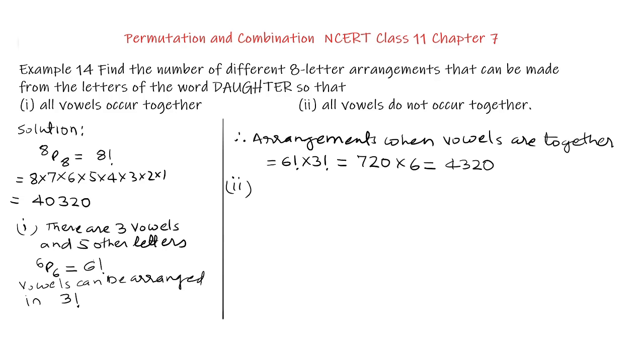All the vowels do not occur together. So if we subtract the arrangements where all the vowels are together from the total number of arrangements, then we will be able to get the answer for part 2 when all the vowels do not occur together. Therefore, all vowels do not occur together equal to